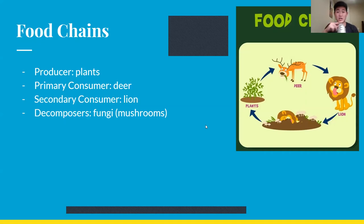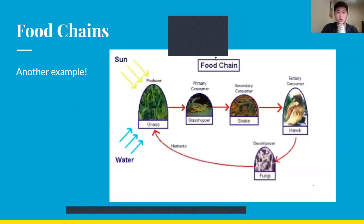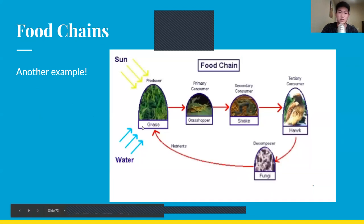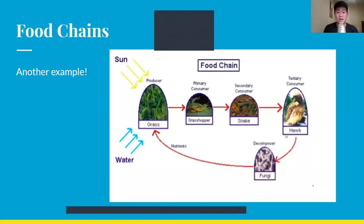Remember, food chains are a cycle of a flow of energy. Here's another quick example: all energy comes from the sun, and the producer — this grass — is able to make its own energy. The grasshopper eats the grass, the snake eats the grasshopper, the hawk eats the snake, and they're all broken down by decomposers like fungi, which provide nutrients back to the grass. The cycle goes over and over — that's why life is able to be sustained on Earth, because energy keeps flowing and sustaining all different kinds of life.